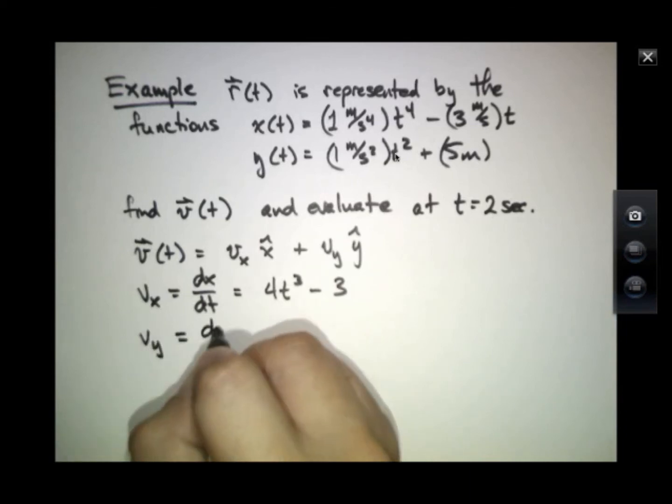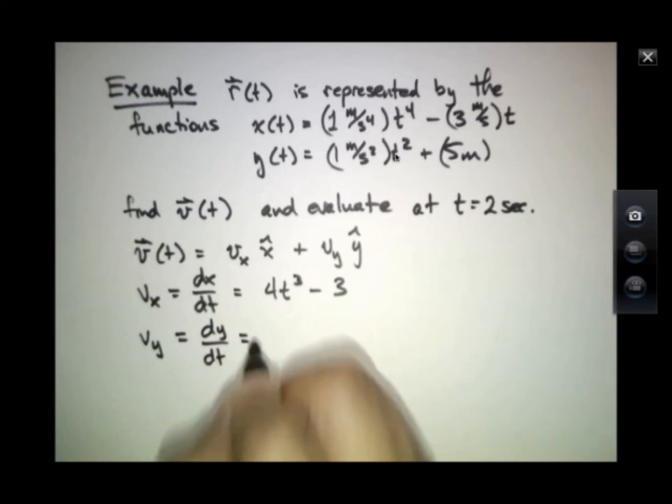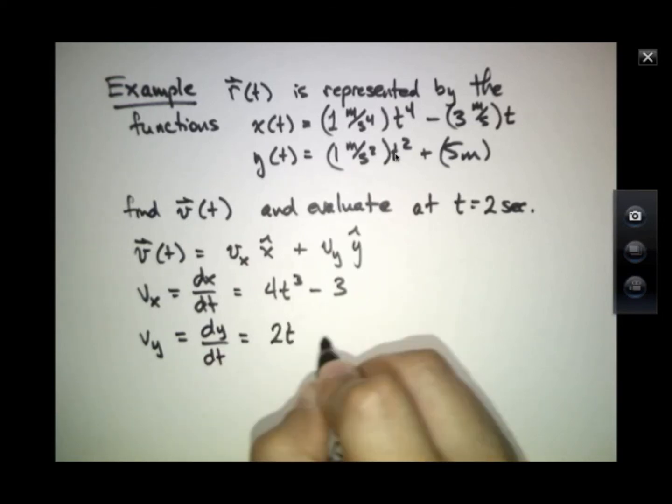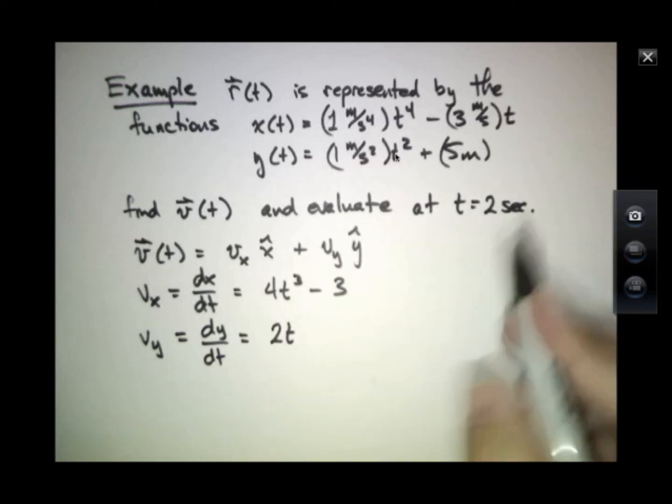vy equals dy/dt, and that equals 2t plus 0, because if I take the derivative of that constant 5, it is 0.